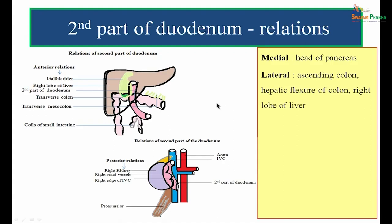Relations of the second part: anteriorly it is related to the gallbladder, right lobe of liver, transverse colon, and transverse mesocolon. Posteriorly it is related to the right kidney, right renal vessels, and the right edge of the inferior vena cava. Medially, the concavity is occupied by the head of the pancreas. Laterally, it is related to the ascending colon, hepatic flexure of the colon, and the right lobe of liver.